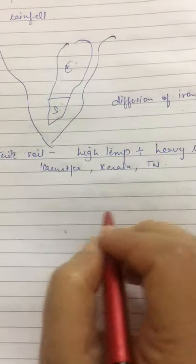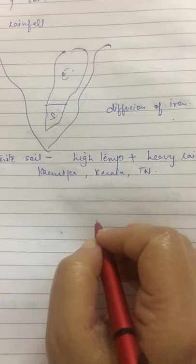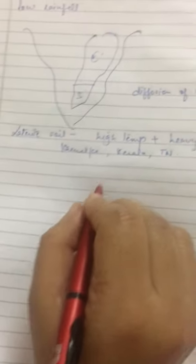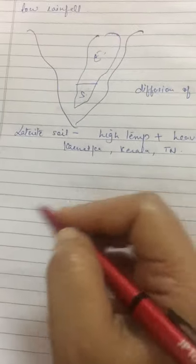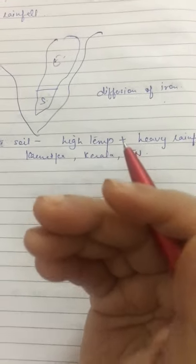The humus content is low in this soil due to leaching. This soil is suitable for cultivation after adequate doses of manures and fertilizers.